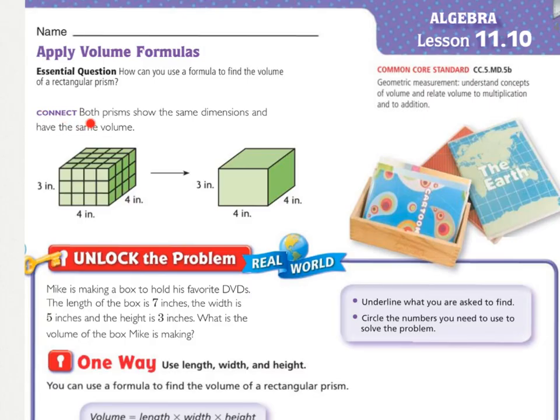Connect. Both prisms show the same dimensions and have the same volume. So even if it doesn't show all the little squares in the picture, it's going to have the same volume, whether it shows the squares or not.